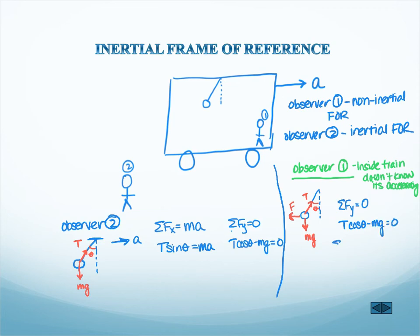And in the X direction, he has T sine theta minus F equals zero. So he's had to introduce this fictitious force. It's only fictitious because we know it's not real, but from his viewpoint, it isn't.